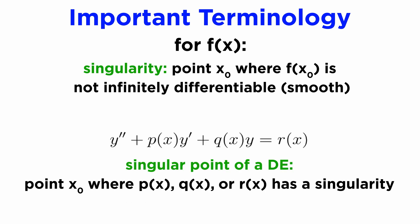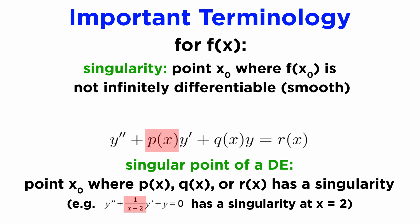Referring to our general form, we say that the point x = x₀ is a singular point of our differential equation if any of the functions p, q, or r have a singularity at the point x₀. For example, if p(x) = 1/(x − 2), then this DE has a singular point at x = 2.